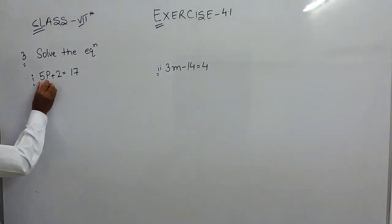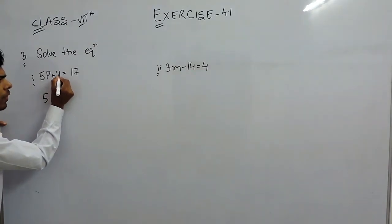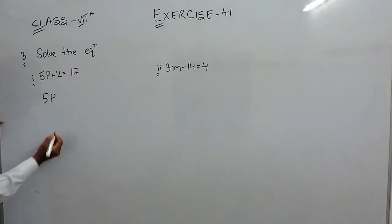So here the variable is p, so we will keep 5p on the left hand side as it is. Now if we shift this plus 2 on the right hand side, it will change its sign.